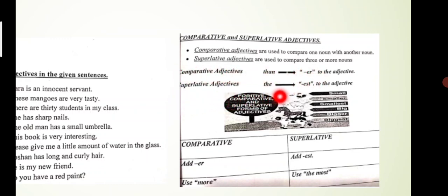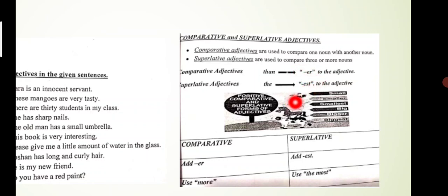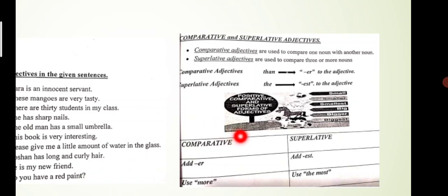In superlative adjectives, you use 'the' before it and the ending is EST — for example: 'This is the best class.' The ER ending is comparative and the EST ending is superlative. The second form is comparative and the third form is superlative. For longer words like 'beautiful,' you cannot say 'beautifuller' or 'beautifullest' — instead you use 'more beautiful' for comparative and 'most beautiful' for superlative.